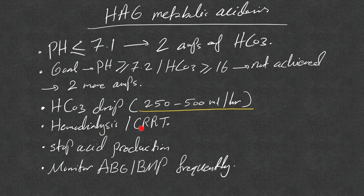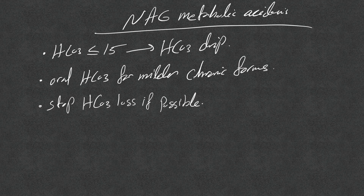Consult nephrology as soon as urine output is absent or minimal — hemodialysis is far more effective than CRRT for removing potassium and stopping acid production. Monitor ABG and BMP frequently. With worsening acidosis, patients may become more hypotensive requiring more vasopressors; bicarb pushes can produce quick blood pressure improvement, but these effects in high anion gap acidosis are temporary unless acid production is stopped. For normal anion gap acidosis, I use a bicarb drip if bicarb ≤15, and oral bicarb for milder chronic forms.